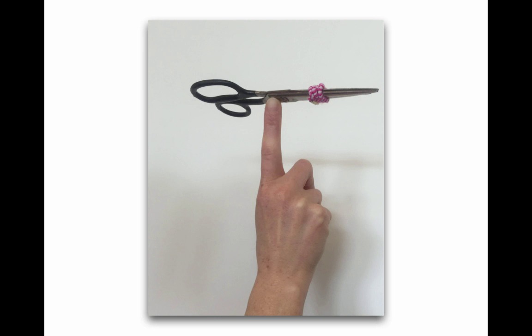The only way to get an object to balance like this is to place the support, which in this case is the fingertip, right below the center of mass. So now you've seen three different ways to locate the center of mass of an object.